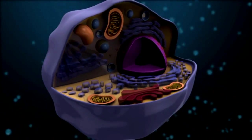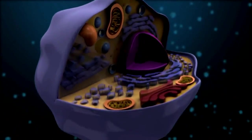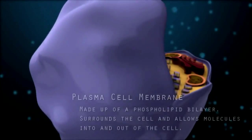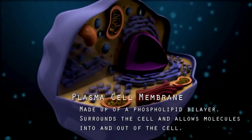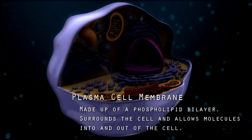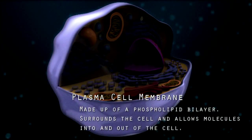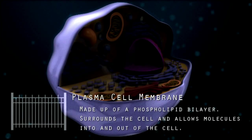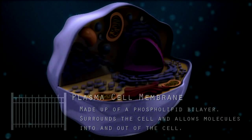A plasma cell membrane is made up of a phospholipid bilayer. The bilayer surrounds the cell, protecting it, and functions as a gate that allows molecules into and out of the cell. In our city, the cell membrane would be like a large fence surrounding the city that only allows certain molecules to go in and out of the cell.